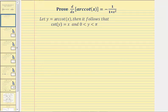To begin, we'll let y equal arc cotangent x. In this equation, x would be the cotangent function value and y would be the angle. It follows that cotangent y must equal x, where the angle y is on the open interval from zero to pi radians, meaning the angle y can be in the first or second quadrant.